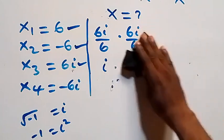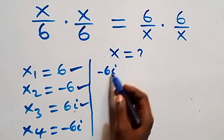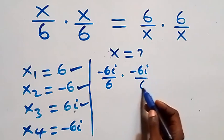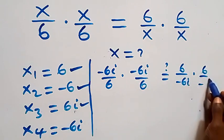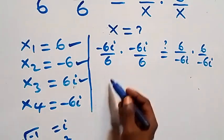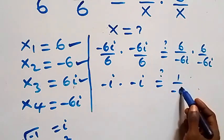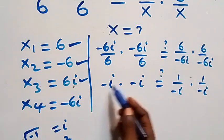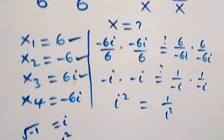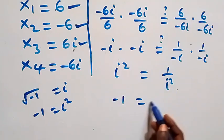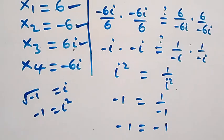Substituting x equals minus 6i: minus 6i over 6 times minus 6i over 6 equals 6 over minus 6i times 6 over minus 6i. This becomes minus i times minus i equals 1 over minus i times 1 over minus i. The negatives give plus i squared equals 1 over i squared, so minus 1 equals 1 over minus 1, giving minus 1 equals minus 1. Left-hand side equals right-hand side.